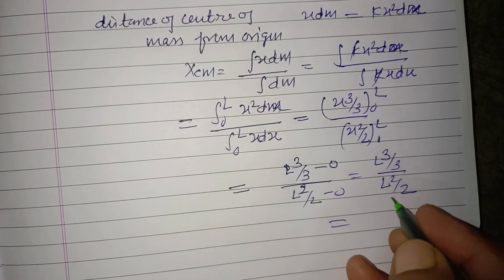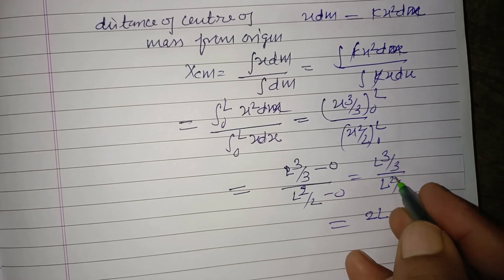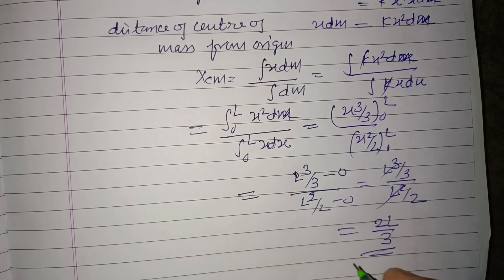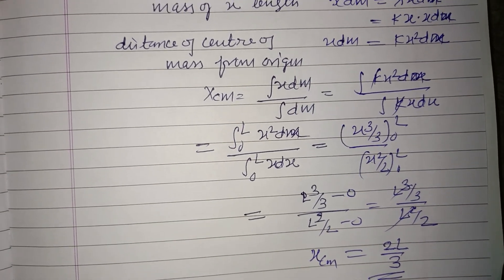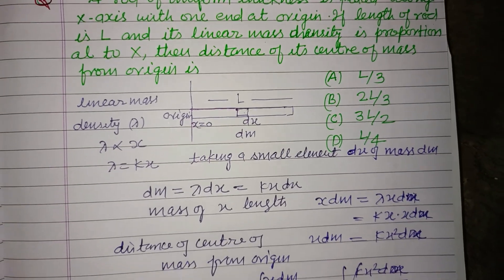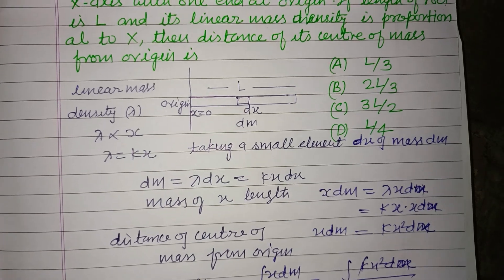So we got 2L by 3. 2L by 3 is the x distance of center of mass.